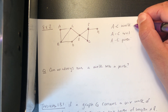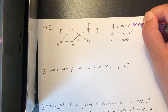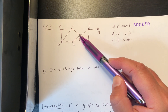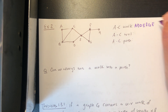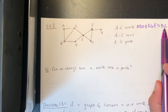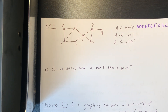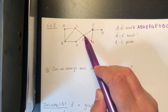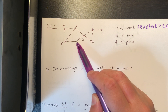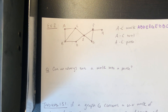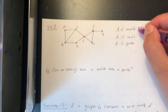Here's an a-to-c walk that is not a trail or path — one that repeats vertices and edges: a, b, d, e, f, g, e, d, b, c. Check that these are all edges in the graph. It starts at a and ends at c, so it's an a-to-c walk. But it's not a trail because we traversed the edge d-e twice — once going from d to e, and again going from e back to d.